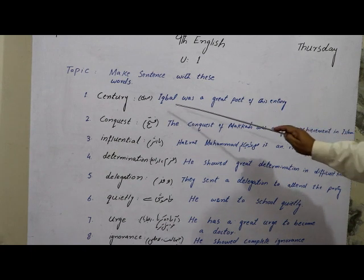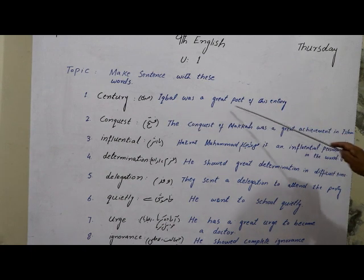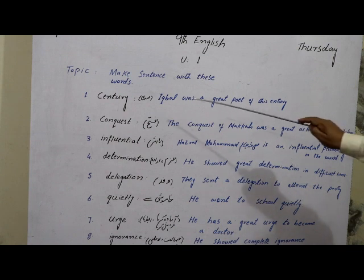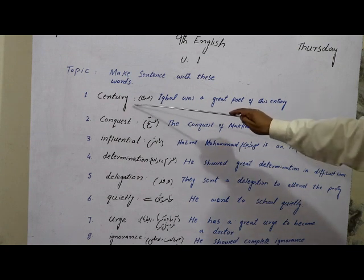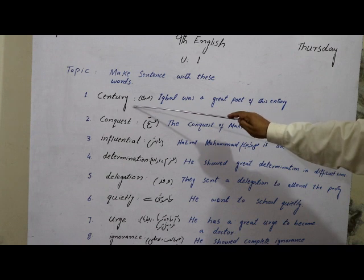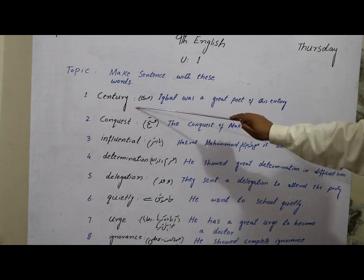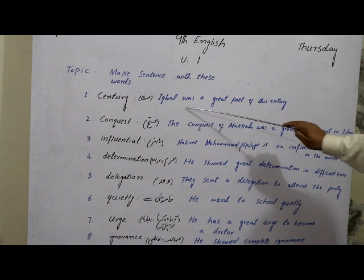You can also write: Iqbal is a great poet of this century. We can also make the sentence like this: Shahid Afridi made a century against India.